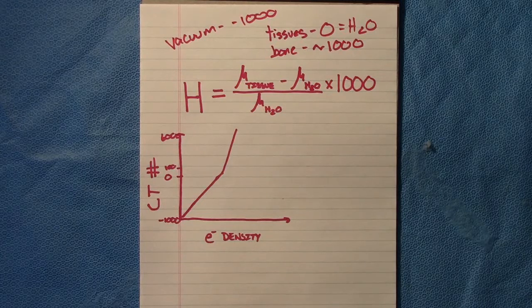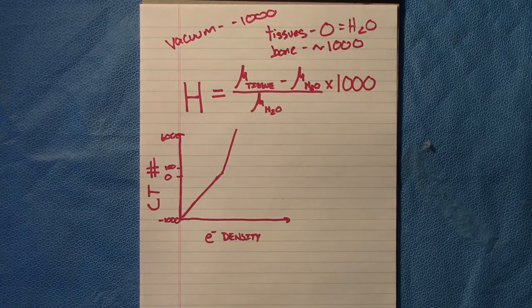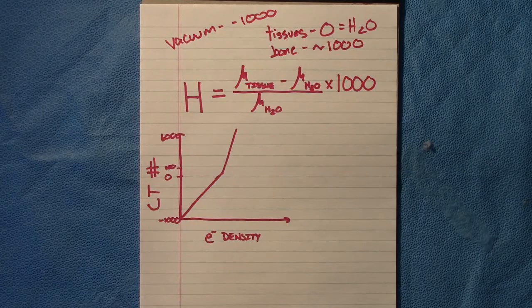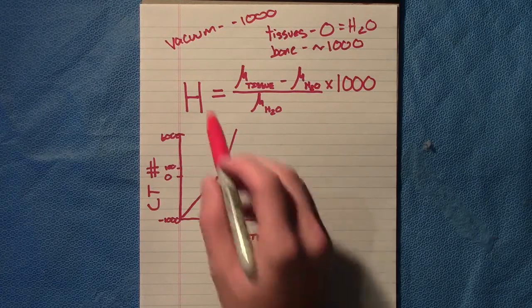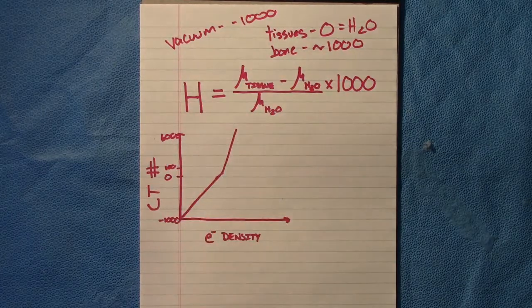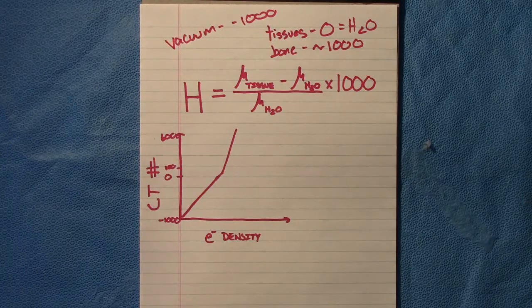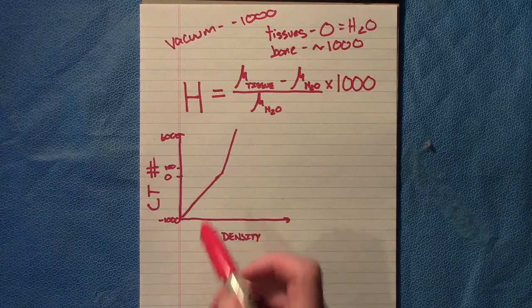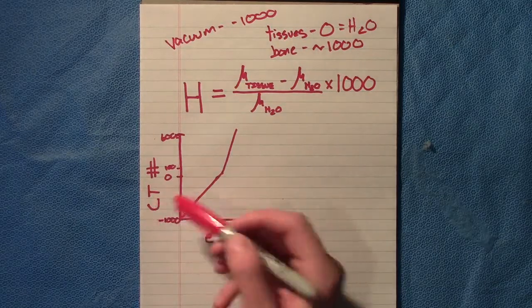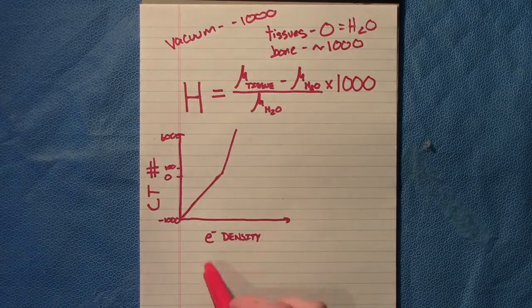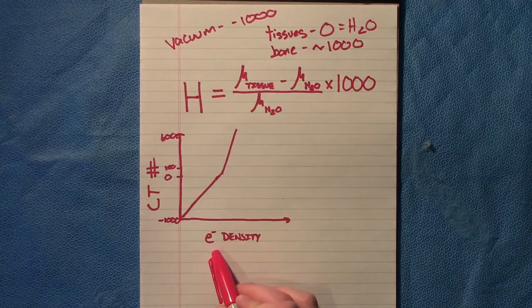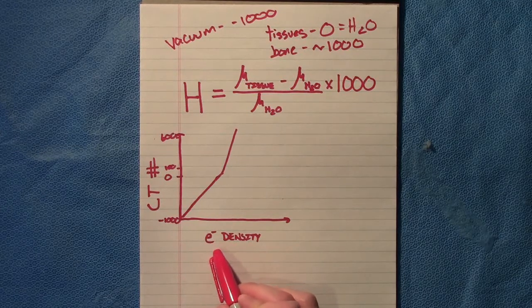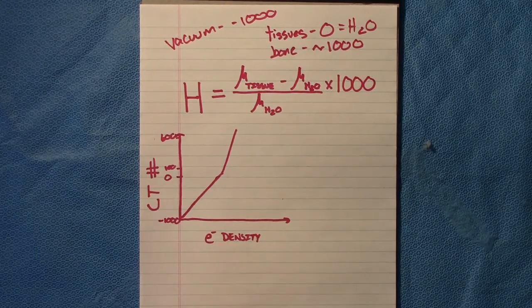To calculate dose for radiotherapy, the first thing we have to do with our CT is find these Hounsfield units for all materials, and we use that using a Gammex phantom. Because finding a CT number is great, but actually what we really want is our electron density, and we're going to use that for our heterogeneity corrections.